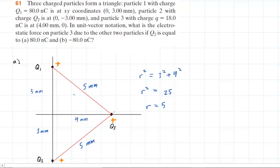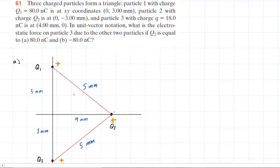So that would be your first step — to get a fully labeled diagram. The next step is to draw in the forces that are acting on the charge Q3. Let's consider the force between Q1 and Q3. Both of these charges are positive, so there would be a repulsive force acting on Q3 — Q1 is pushing Q3 in this direction. We can call that force F13.